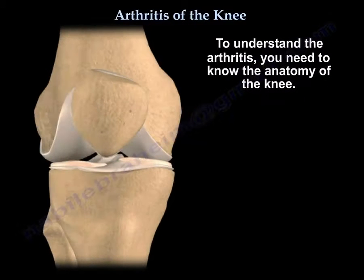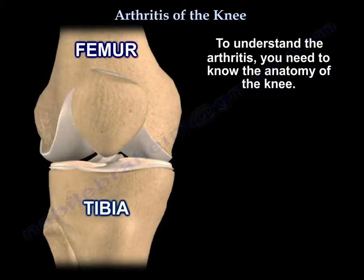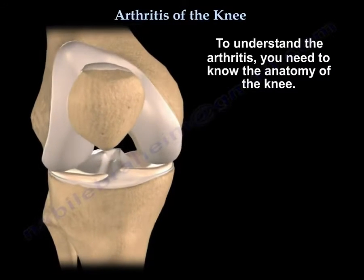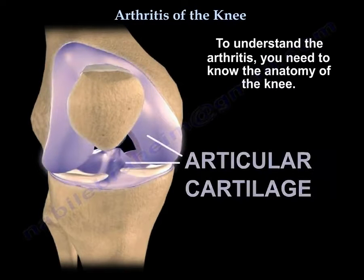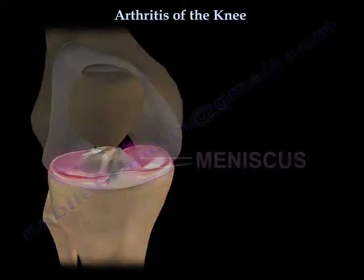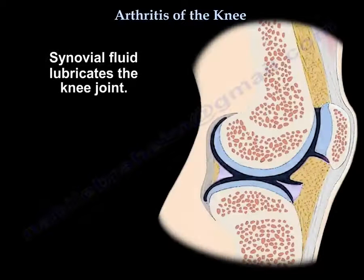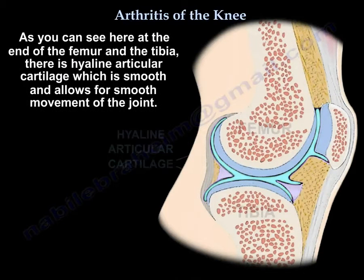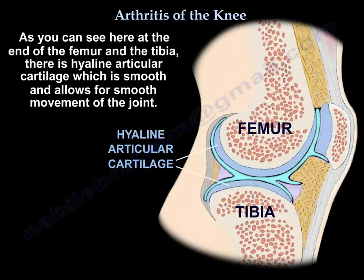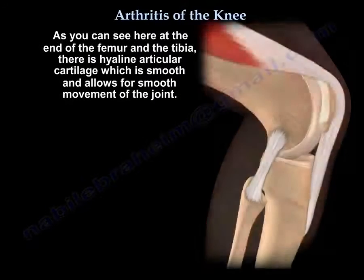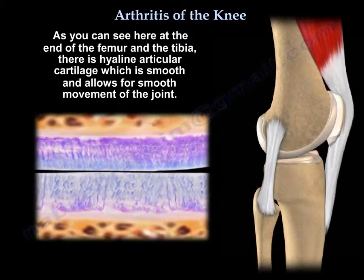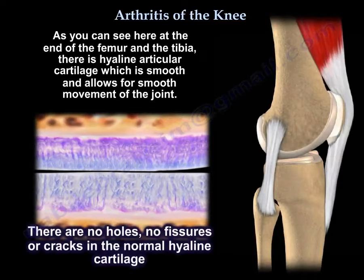Arthritis can be mild, moderate, or severe. To understand arthritis, you need to know the anatomy of the knee. Here is the femur, the tibia, and the patella — the knee cap. Here is the cartilage of the knee and the meniscus. There is synovial fluid that lubricates the joint. At the ends of the femur and tibia there is hyaline articular cartilage, which is smooth with no holes, fissures, or cracks.